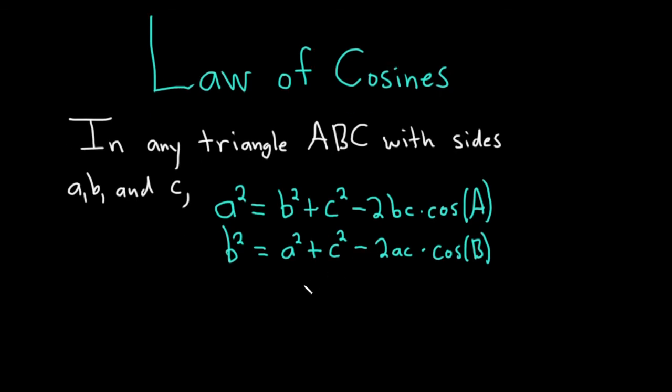Then the last one is c squared equals, you square the other ones, so a squared plus b squared, minus 2ab this time, because you multiply them, times the cosine of the angle opposite little c, which is big C. So these are the formulas for the law of cosines, very, very useful.